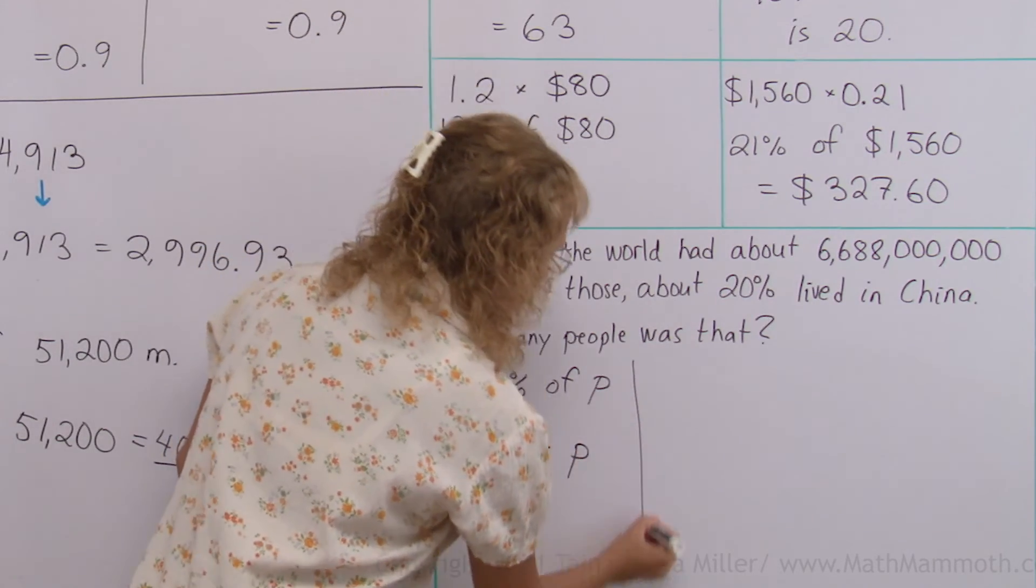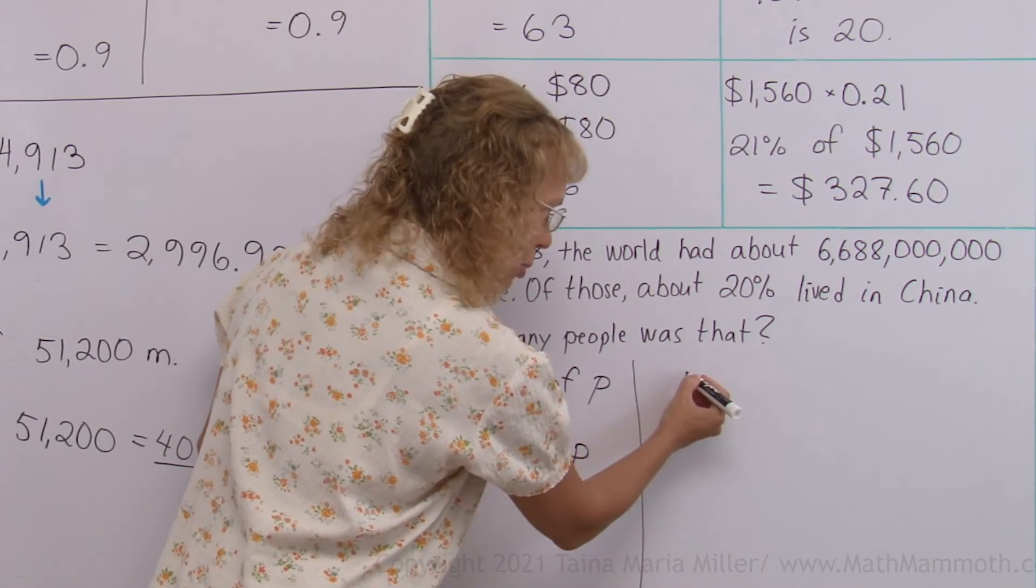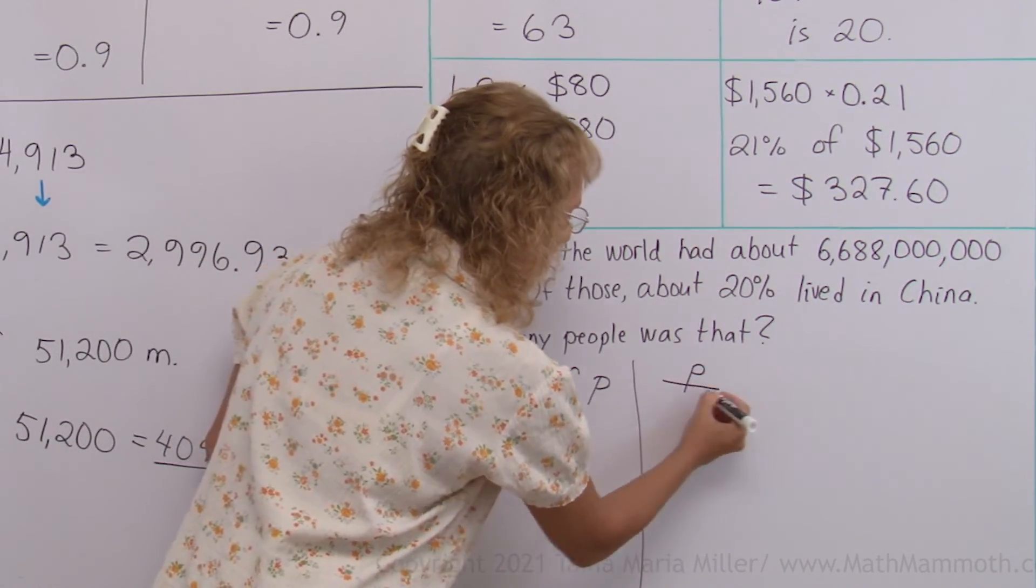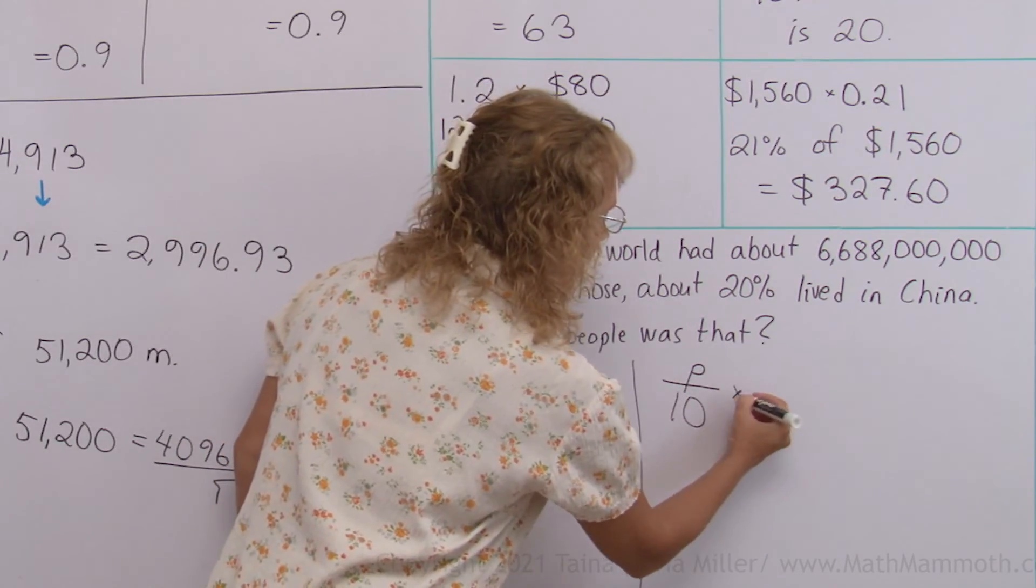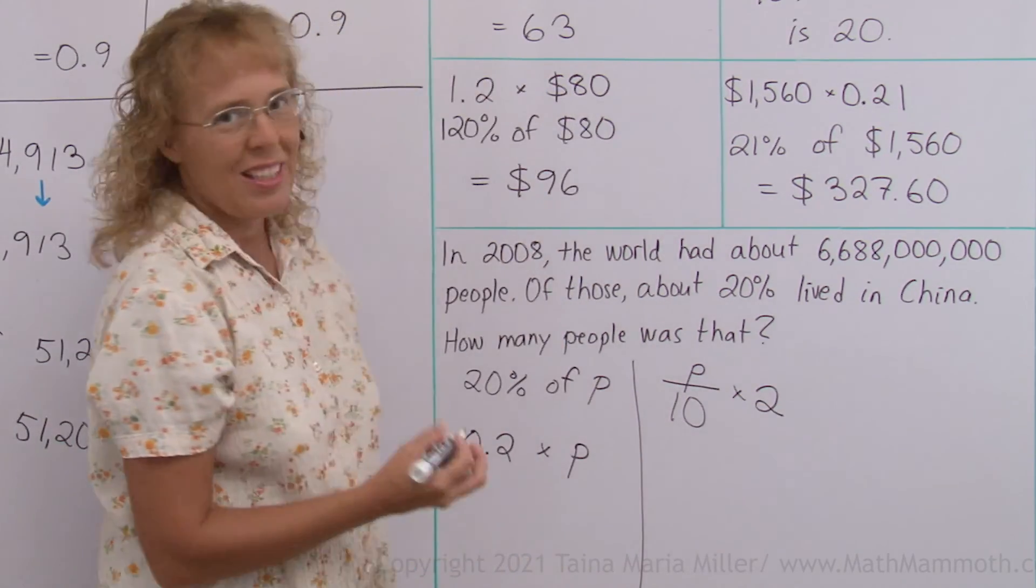One way would be to first find 10% of that number and then double that. So to do that, to find 10% of the number, I would divide it by 10. P divided by 10 and then check double that. And then one more way.